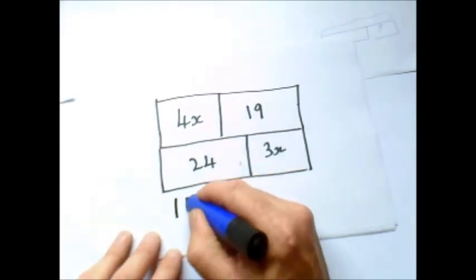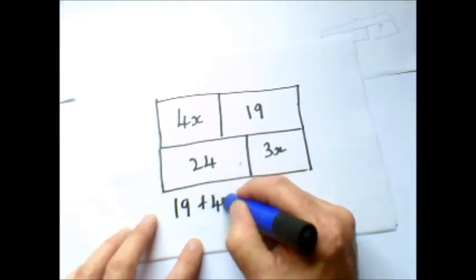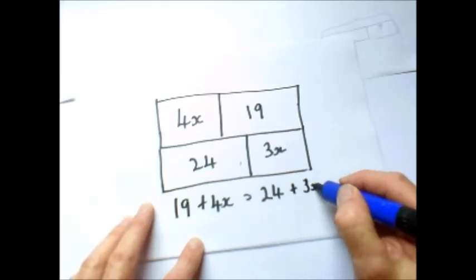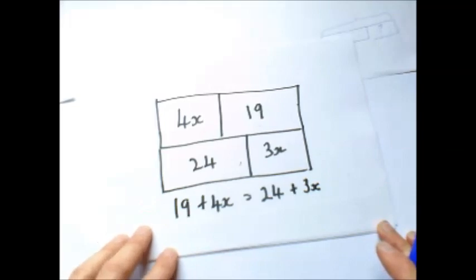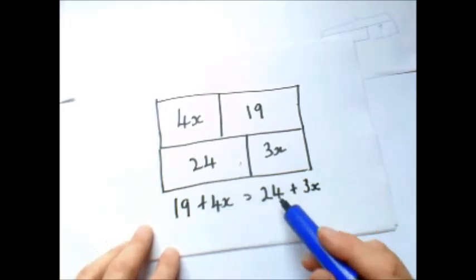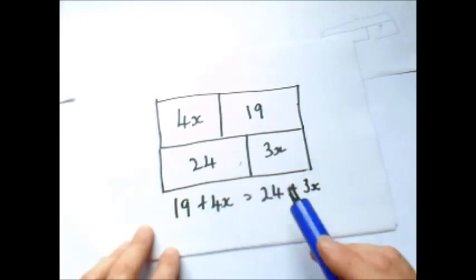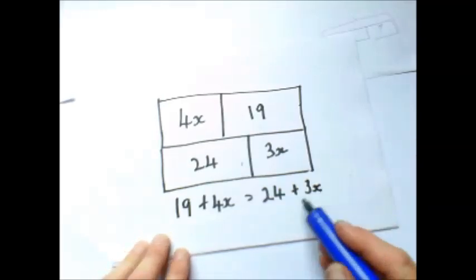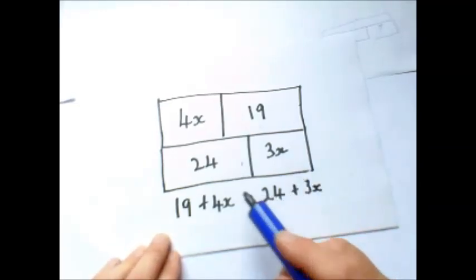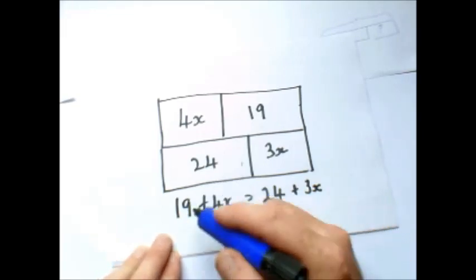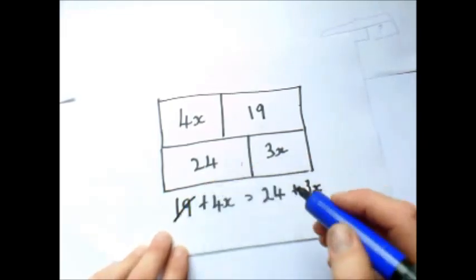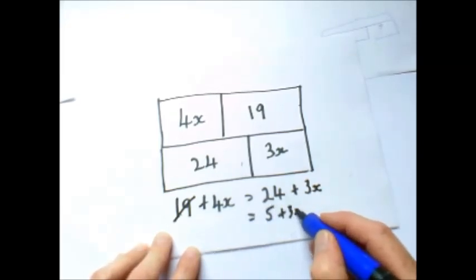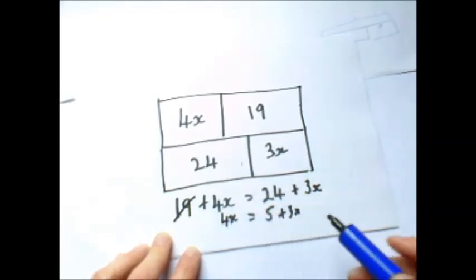So now we've got 19 plus 4x equals 24 plus 3x. Now if we do some simple subtraction from this side and this side, so making sure whatever we take off this side, we take off this side, or whatever we add to this side, we add to this side, we should be able to work out the answer. So now we have on this side here 24, which is bigger than 19. So it would be prudent to take 19 off 19. If I take 19 off that side, I'll get rid of it. If I take 19 off this side, I've got 5 plus 3x. So now 4x equals 5 plus 3x.